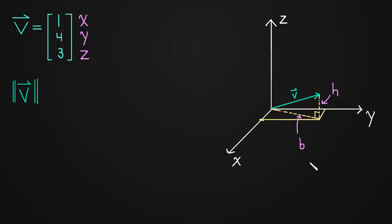So knowing that, we can just apply the Pythagorean Theorem. And the length of v is simply the square root of the base of that triangle squared plus the height of the triangle squared. So now all we have to do is figure out what is the base and what is the height of that triangle.